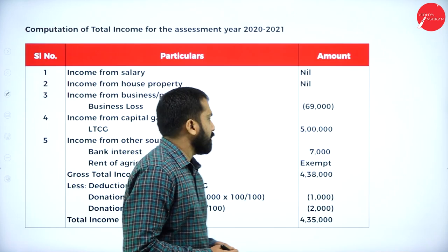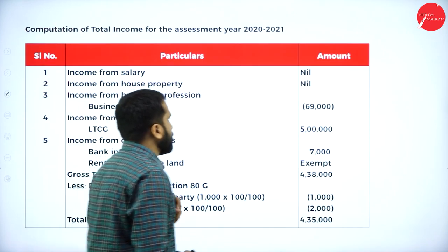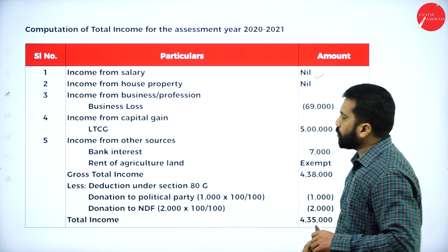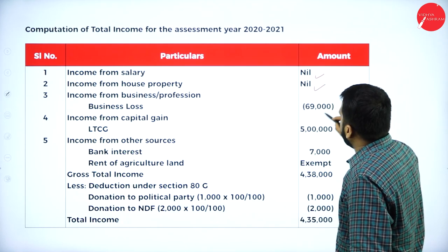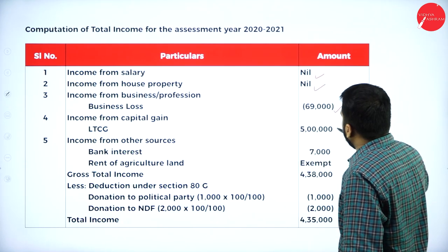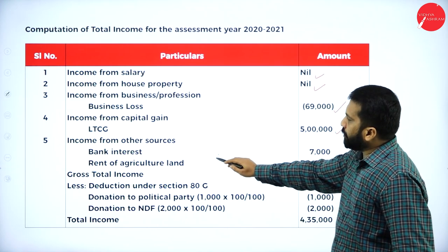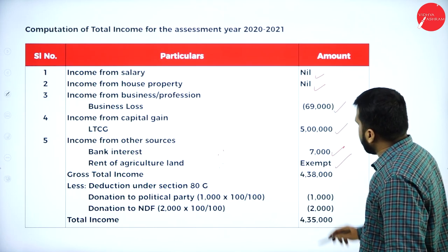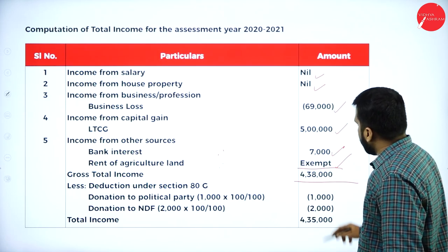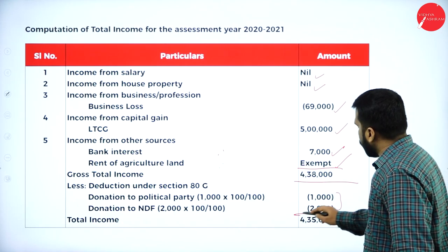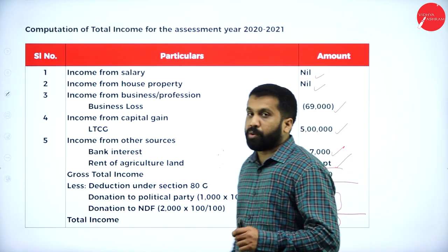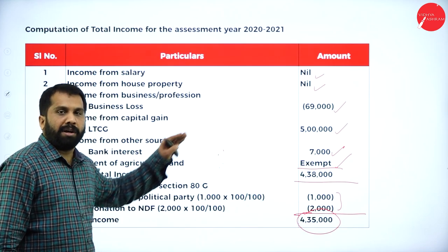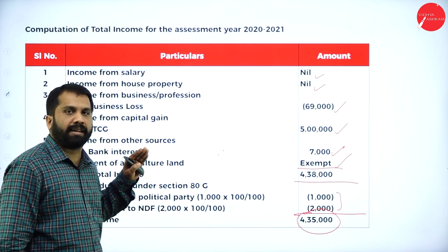Now we will find out total income. Income from salary — nil. House property not given in the question — nil. Business income: it is not income, it is a loss. Capital gain — 5 lakh. Bank interest — 7,000. Agriculture income is exempt. After adding, we get 4 lakh 38,000, then minus the 2 donations: so 4 lakh 35,000 is your total income. We have not calculated taxable income — we calculated only total income.